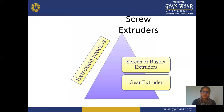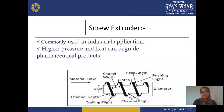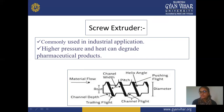Next is screw extrusion. This extrusion process depends on two types: screen or basket extruder, and gear extruder. In screw extrusion, which is commonly used in industrial applications, high pressure and heat can create pharmaceutical products. This screw extruder is largely used in industry. You must maintain particular pressure as well as temperature, because too much heat or pressure can cause problems and decrease product quality.